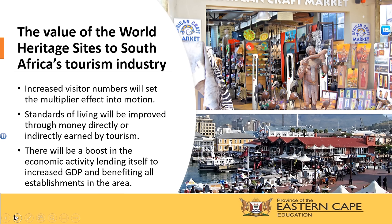The bottom image is taken of the V&A Waterfront where people are visiting various restaurants and enjoying tourist activities, which immediately brings the multiplier effect into play. Through the multiplier effect, standards of living will be improved through money directly or indirectly earned by tourism. You will see that many people are walking around and visiting the V&A Waterfront — they may be on their way to a Robben Island tour or may have just come back. This is immediately indicative of an economic boost in the area, which will then lead to an increased contribution of tourism to the GDP and will benefit establishments found in the area.